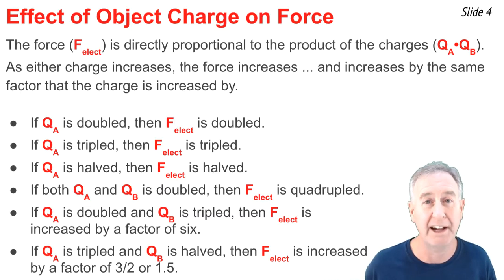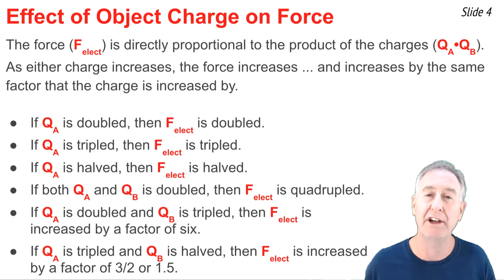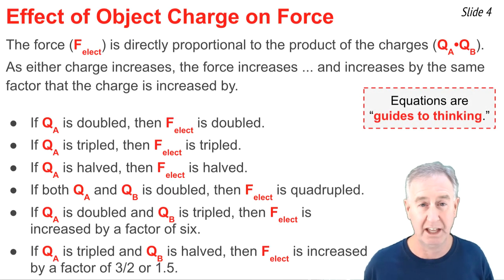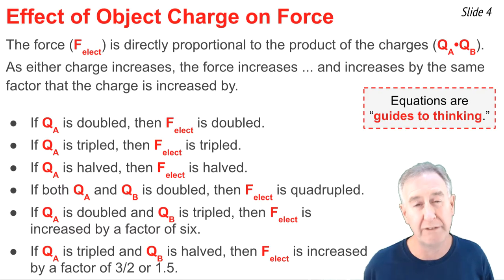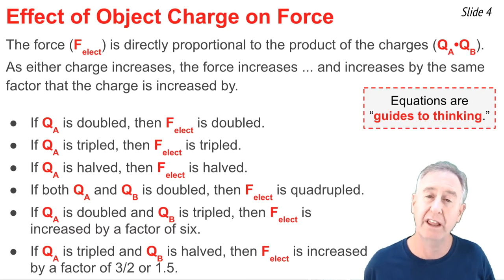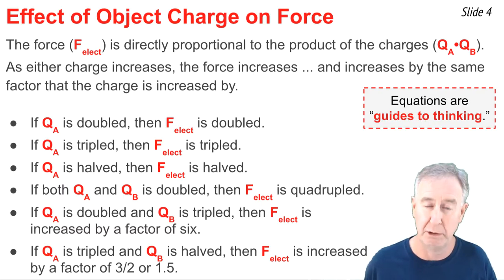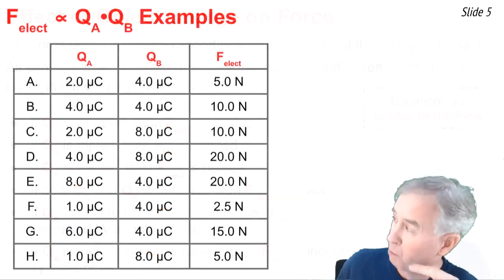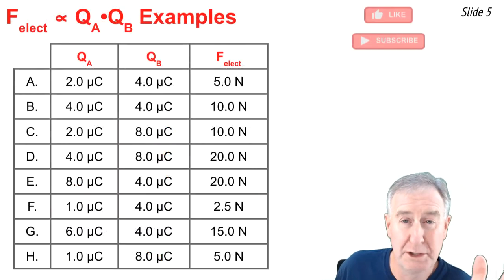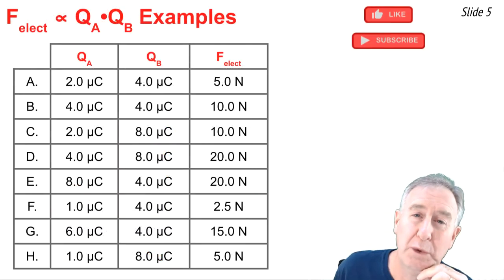When we use Coulomb's Law in this way, we're using it as a guide to thinking about how an alteration in one of the variables, like QA or QB, would affect another variable, like the electric force. This table will help us to illustrate how to use an equation as a guide to thinking.